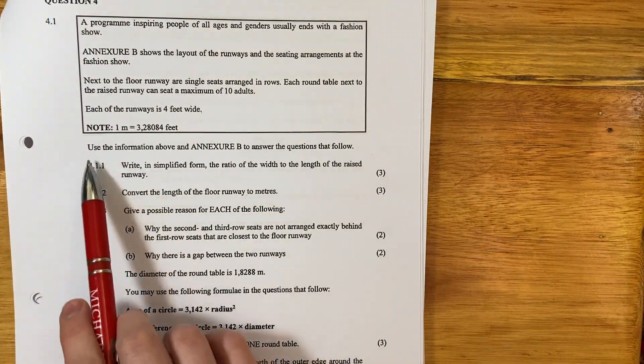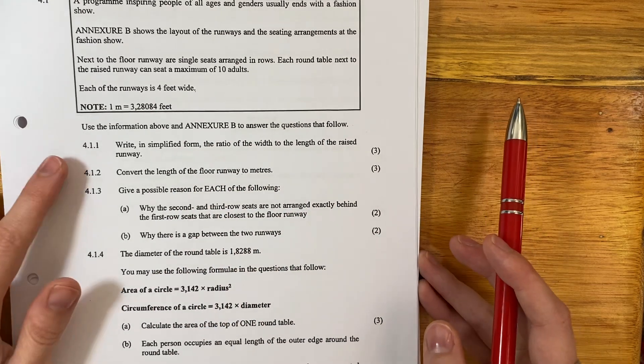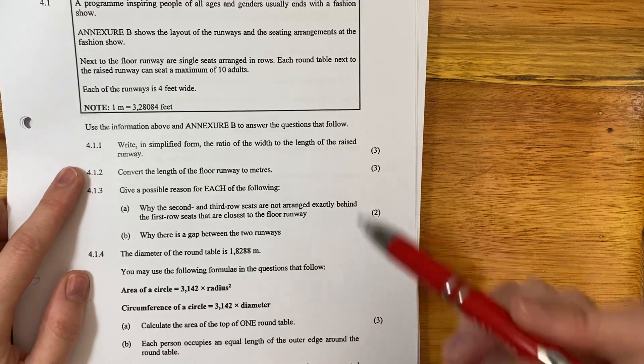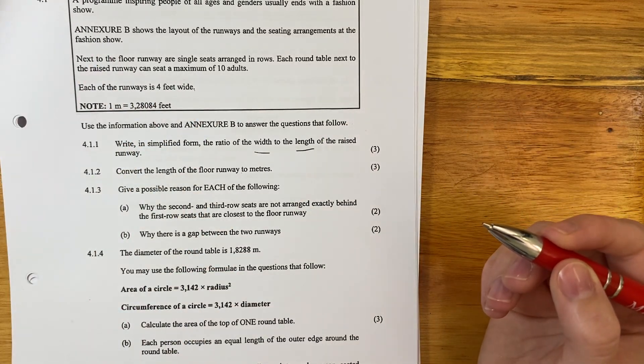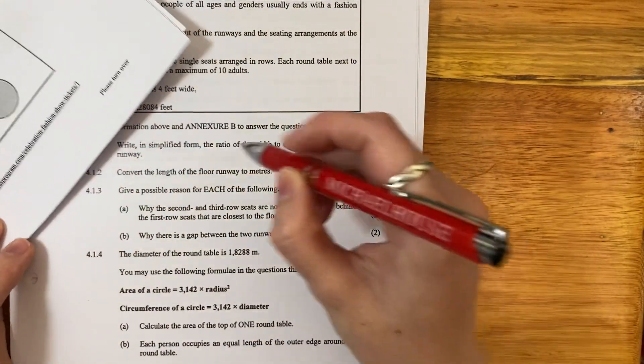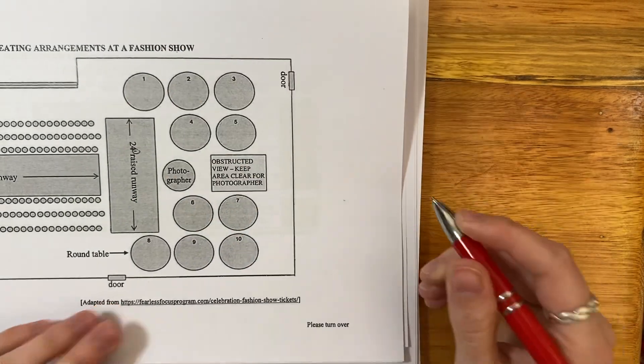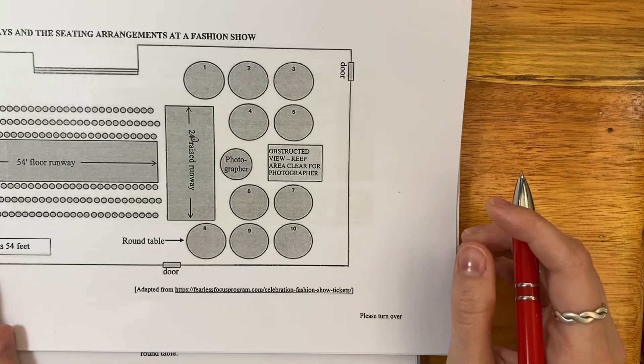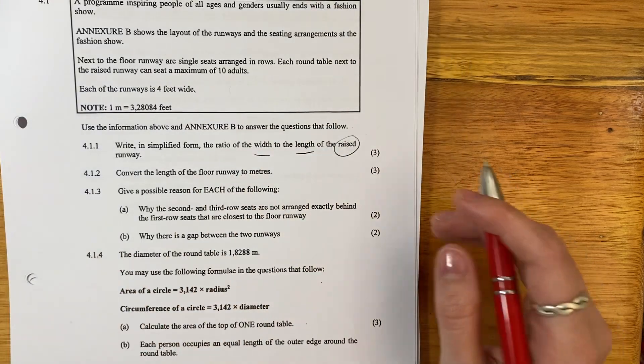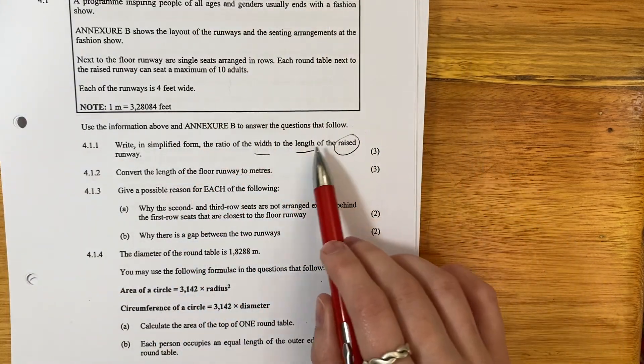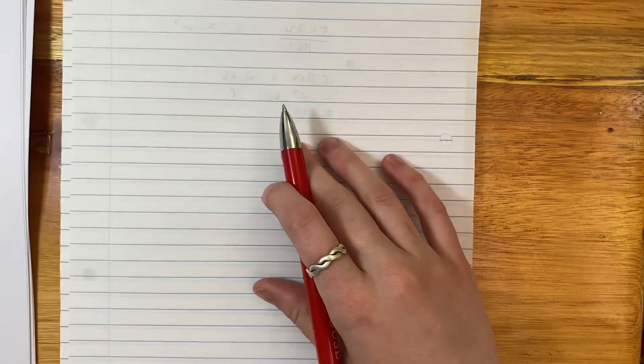Use the information above and Annexure B to answer the questions that follow. 4.1.1: Write in simplified form the ratio of the width to the length of the raised runway. The runway is four meters wide, and the raised runway is 24 feet. So we're going to start on a new page.